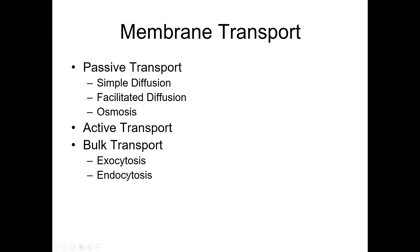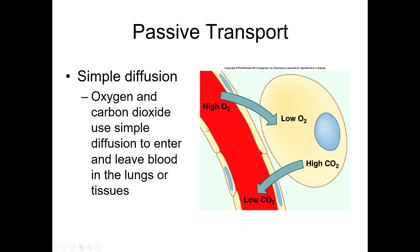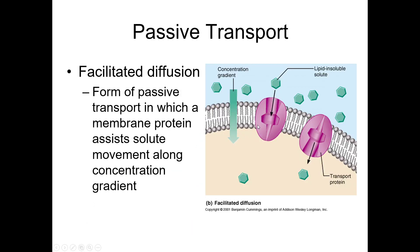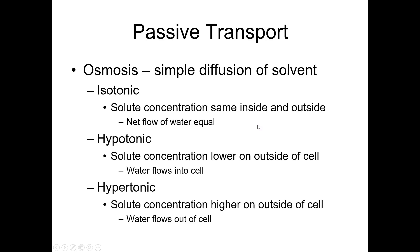These six concepts: simple diffusion, facilitated diffusion, osmosis, active transport, and then the two bulk transport, exocytosis and endocytosis. Those are the possible answers. In reality, it's everything but osmosis because osmosis has its own question amongst the five. Make sure you know the examples that we talked about because those are the examples I'm going to use for the quiz.